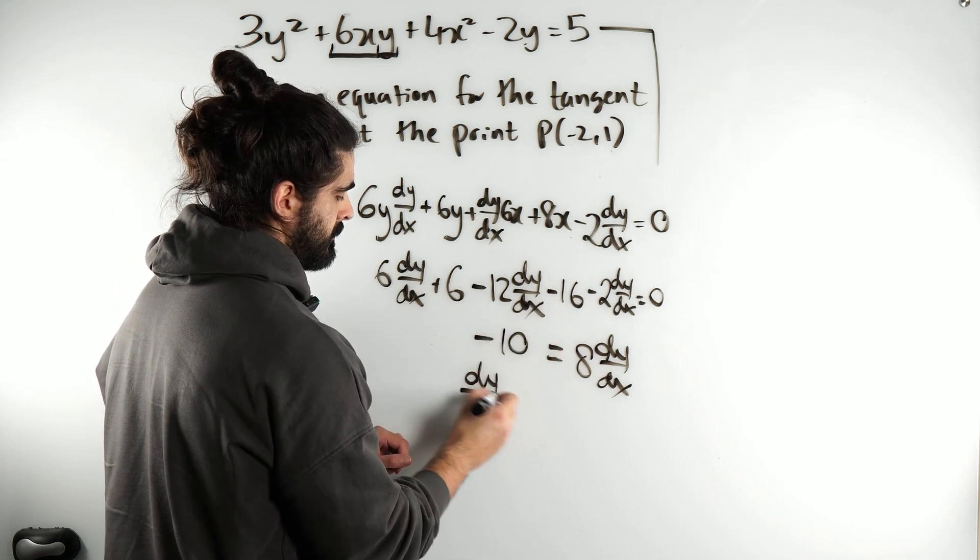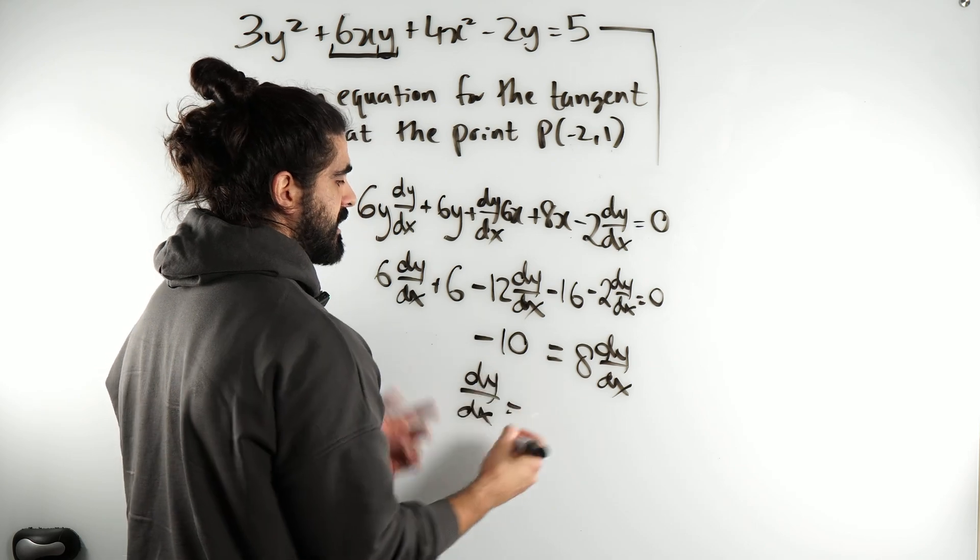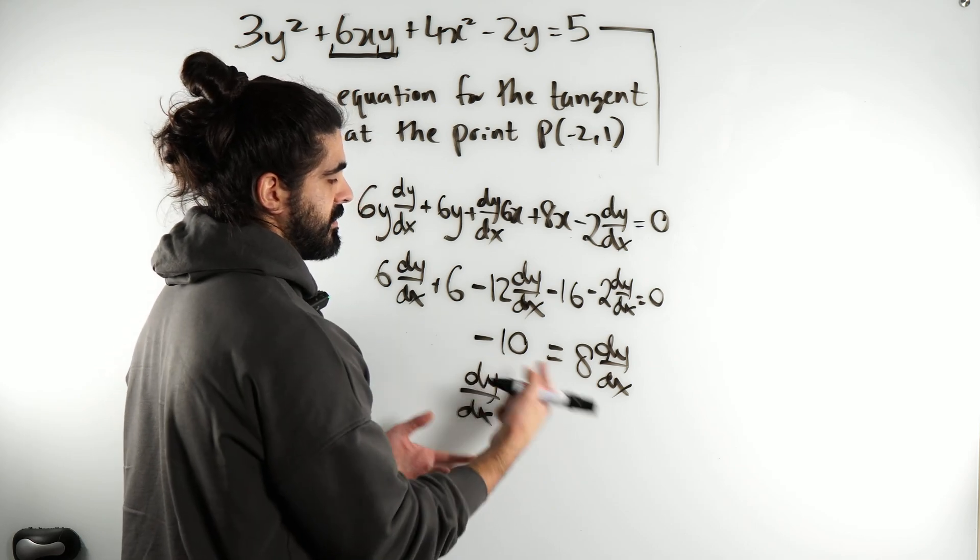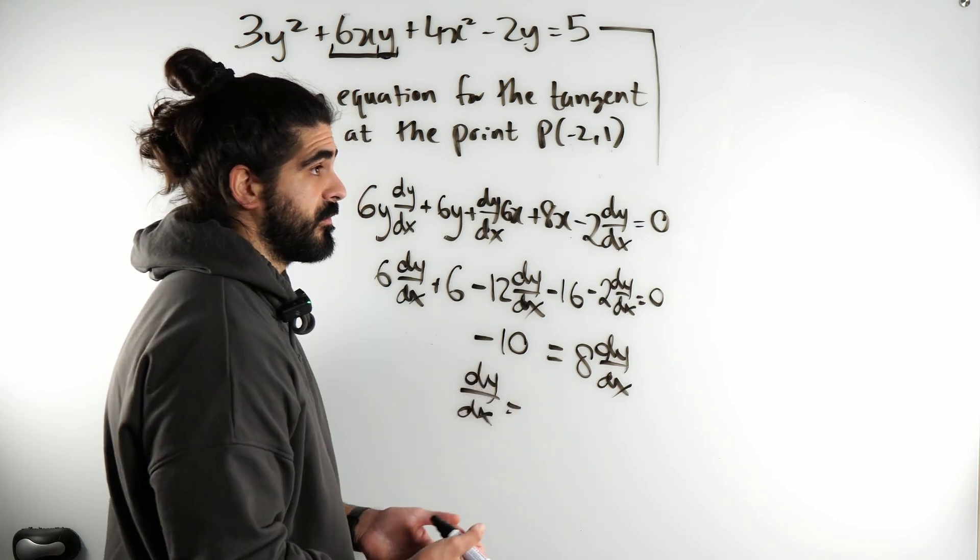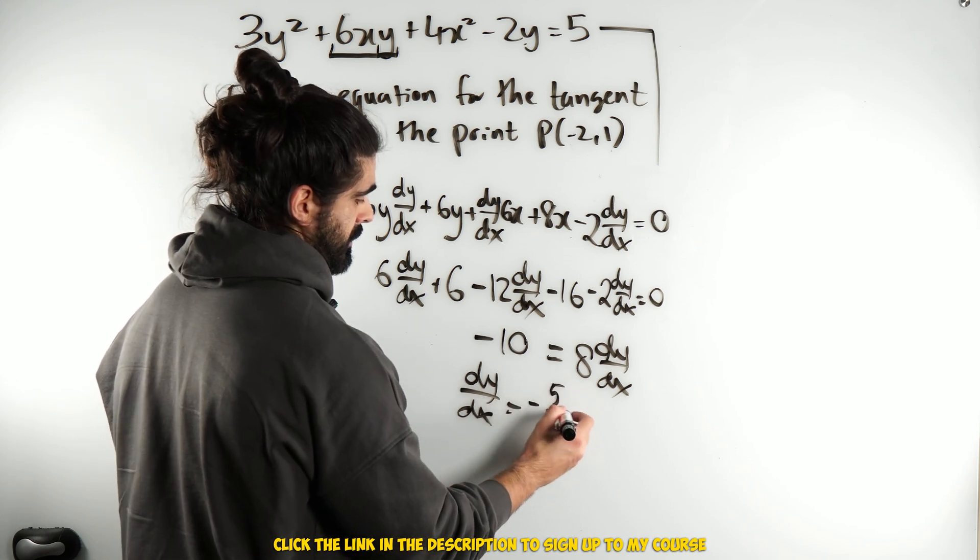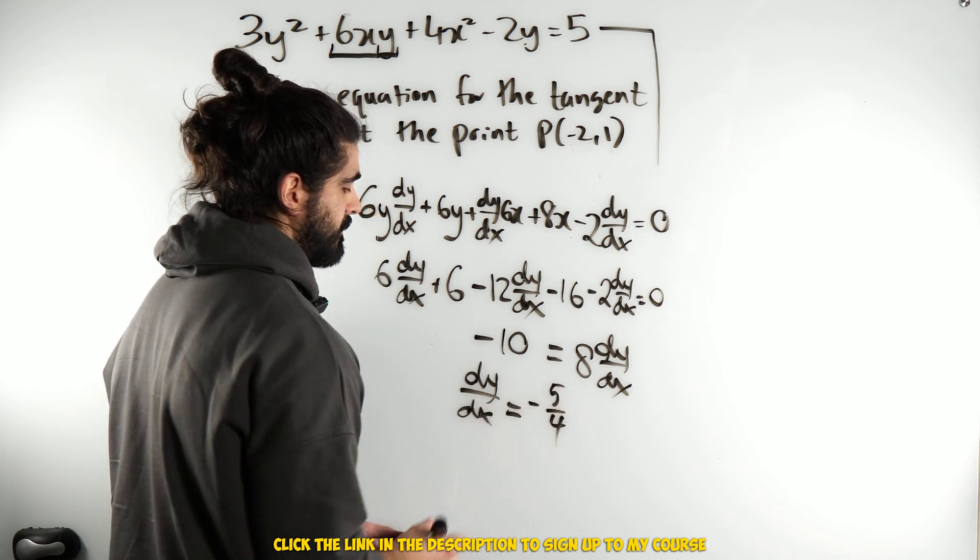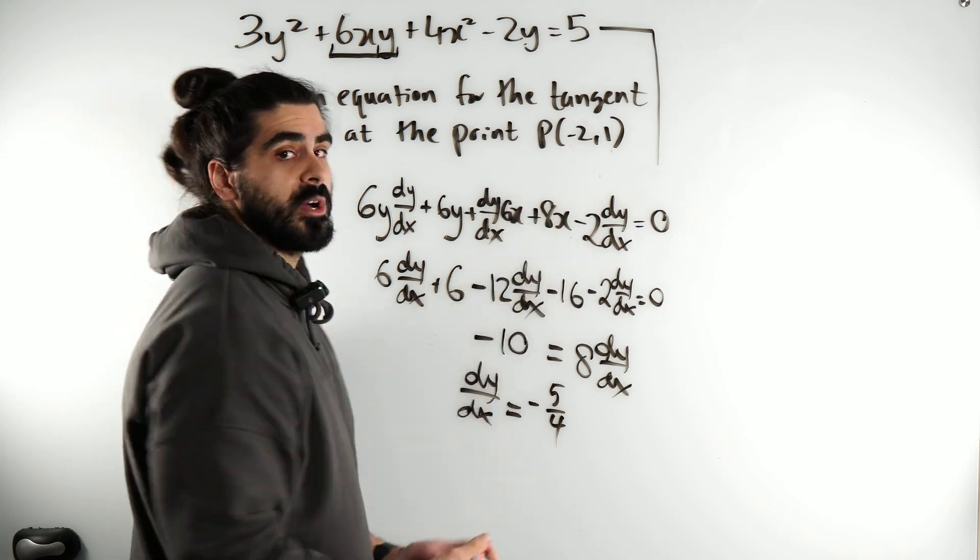So my gradient, minus 8 divided by 10, which is 10 over 8, 5 over 4, minus 5 over 4. Cool, so we got our gradient. Now, we have the point, we can work out the tangent.